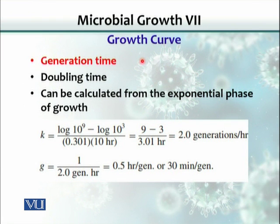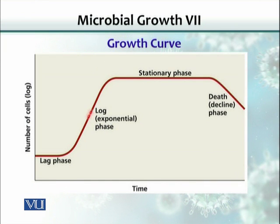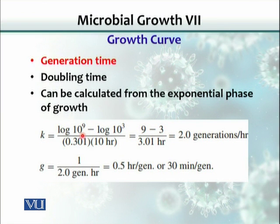One of the uses of this growth curve is that generation time can be calculated. Bacteria multiply by binary fission — one bacterium becomes two, two become four, four become eight, and so on. This is exponential growth. To calculate generation time, we target the log phase where the organism is replicating actively. We only need two readings — two points — to know the number of bacteria at two different times.